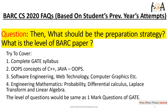The next query is: what should be the correct preparation strategy and what is the level of the BARC exam? For the preparation strategy, please try to cover the complete GATE syllabus, plus OOPs concepts of C++. Then prepare Java — important input/output questions from Java — and then go for software engineering, web technology, and computer graphics. Try to cover engineering mathematics as well: major topics of probability, differential calculus, Laplace theorem, linear algebra, permutation and combination, set theory, and graph theory. These are very important topics.